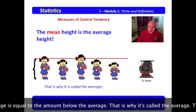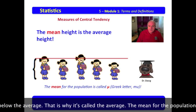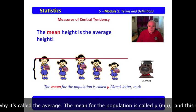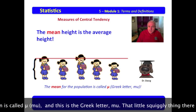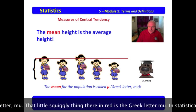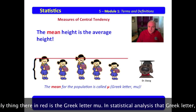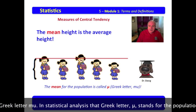That is why it's called the average. The mean for the population is called mu, and this is the Greek letter mu, that little squiggly thing there in red is the Greek letter mu. In statistical analysis, that Greek letter mu stands for the population mean.